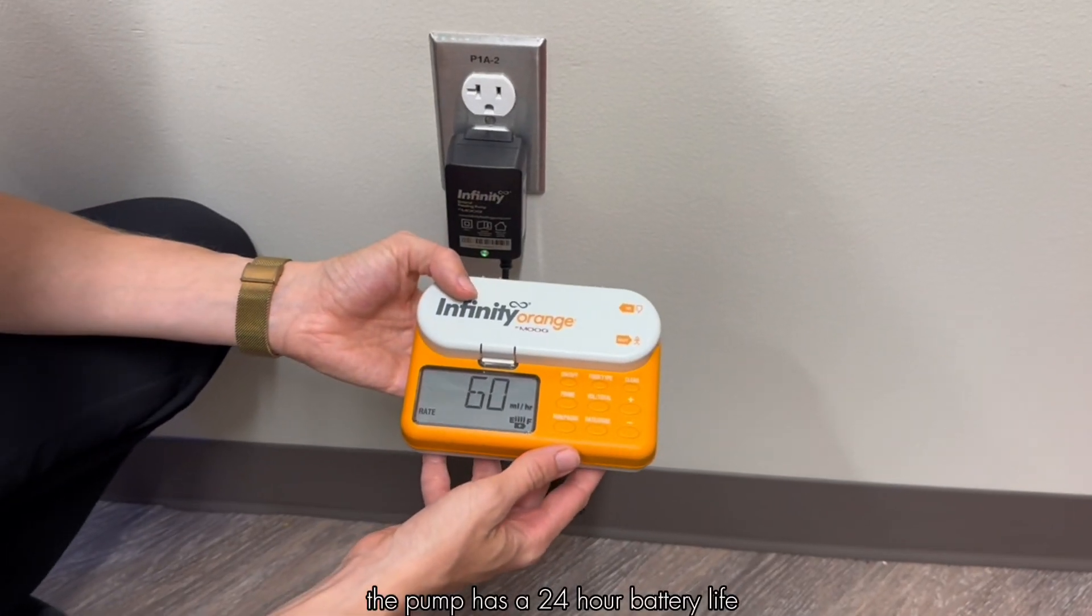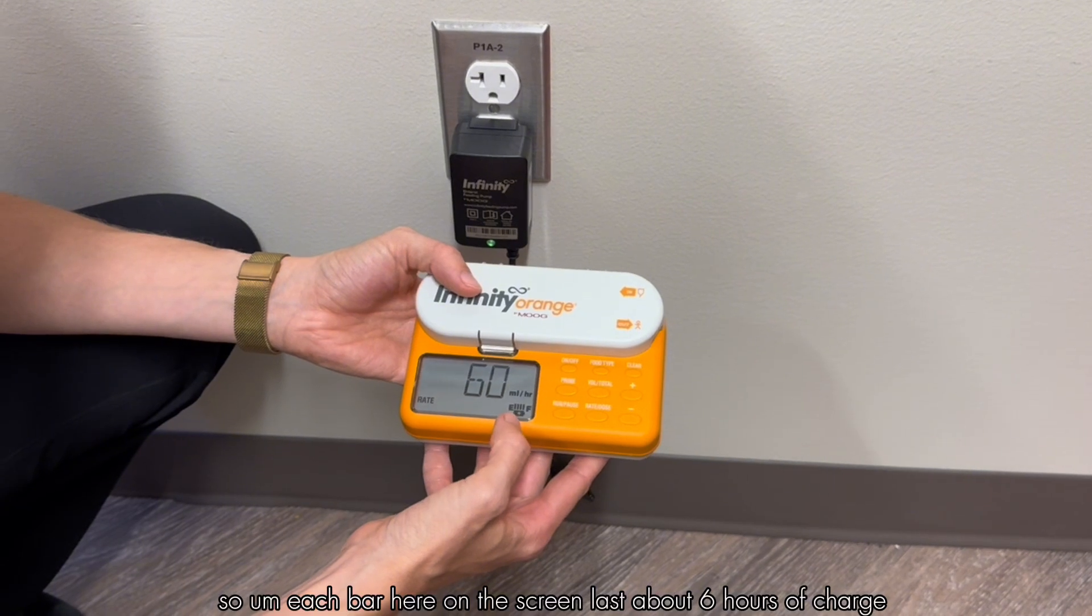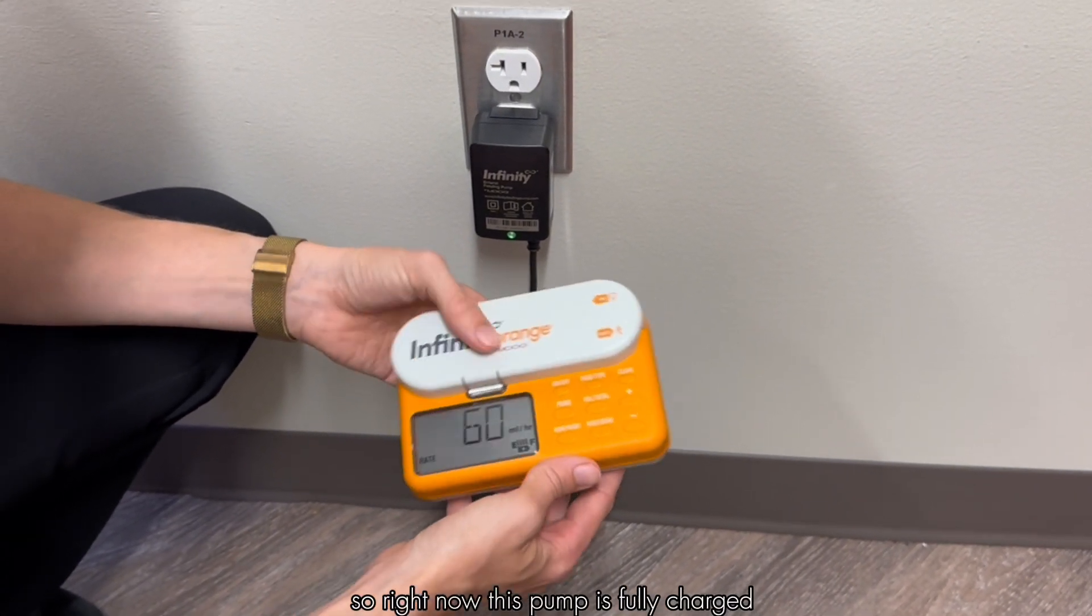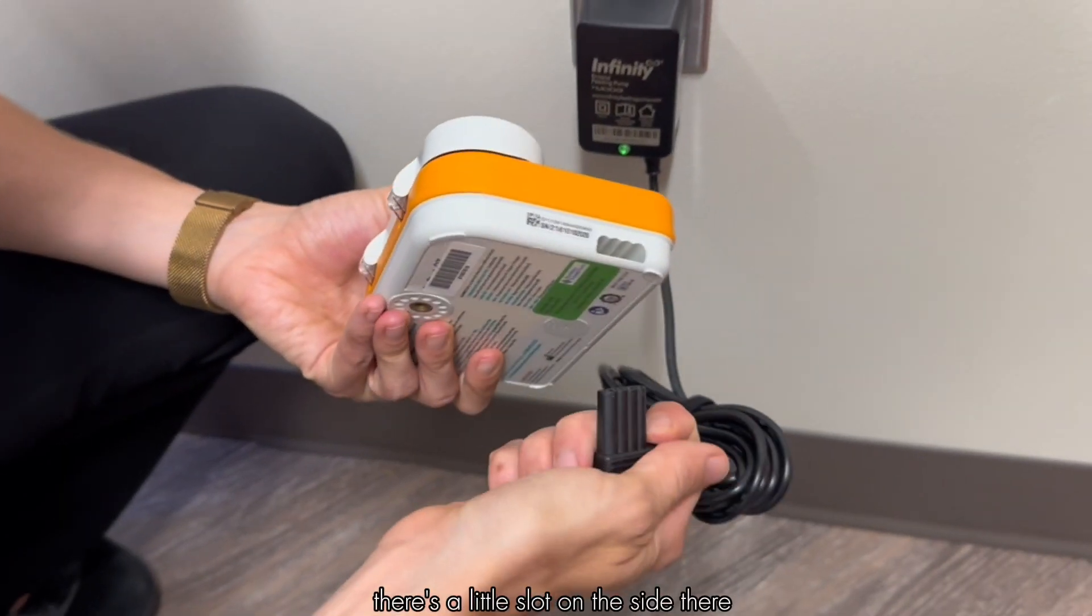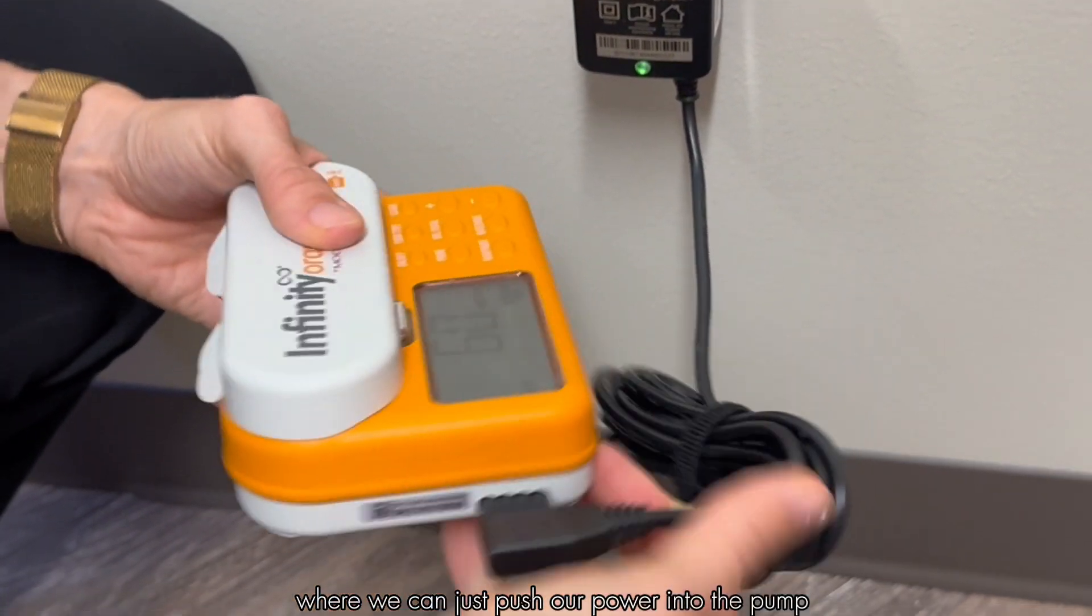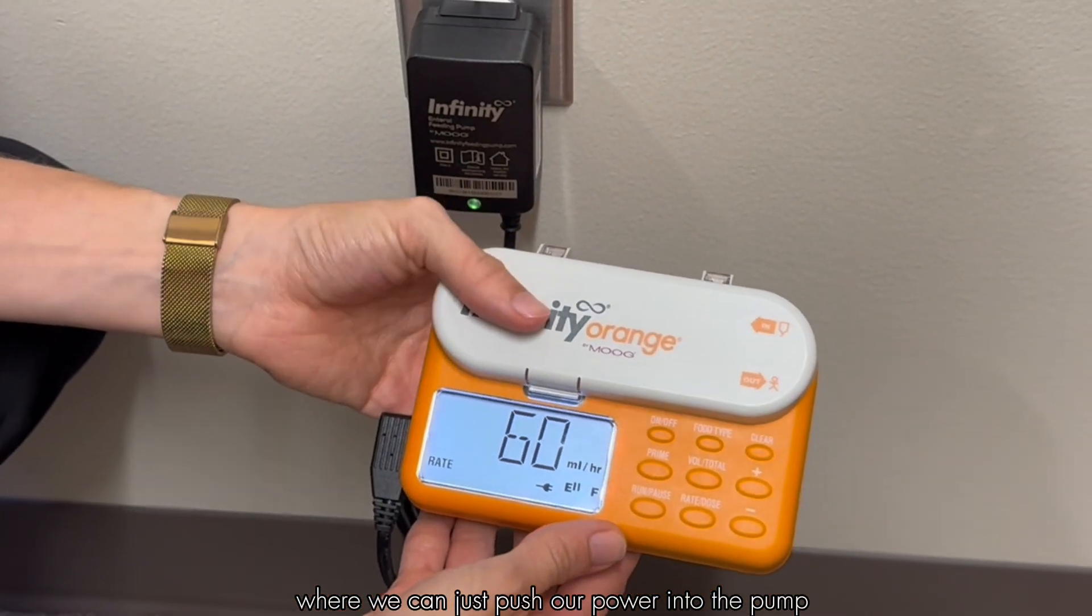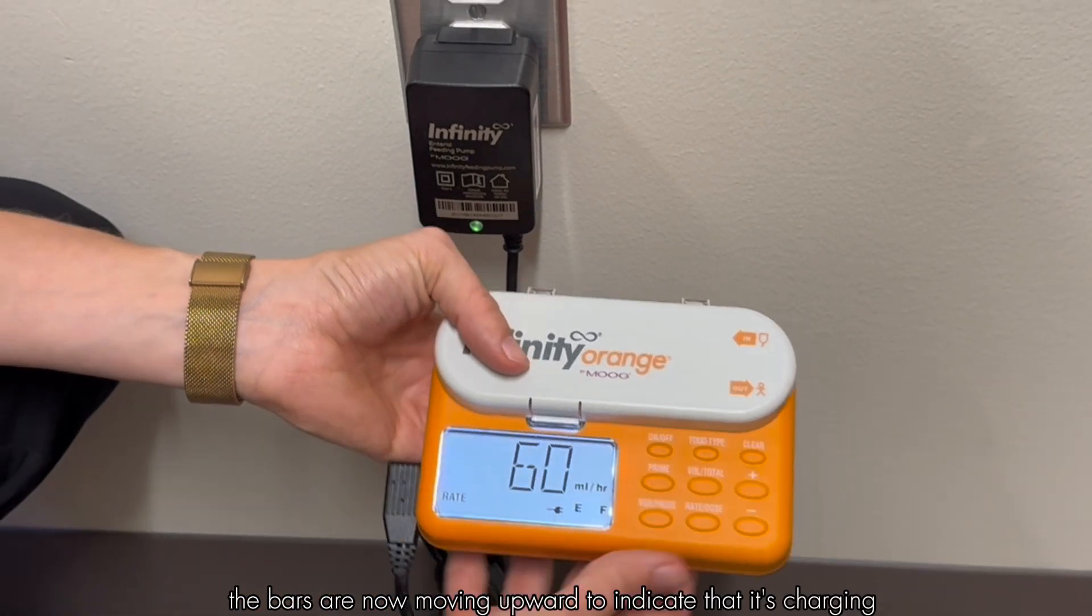The pump has a 24 hour battery life so each bar here on the screen lasts about six hours of charge. Right now this pump is fully charged but when it does get low you can plug it in. There's a little slot on the side there where we can just push our power into the pump and then you can see the bars are now moving upwards to indicate that it's charging.